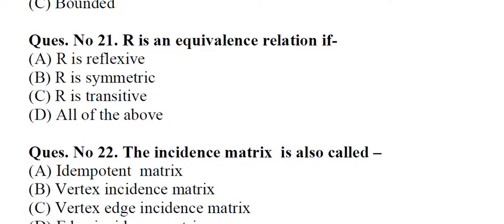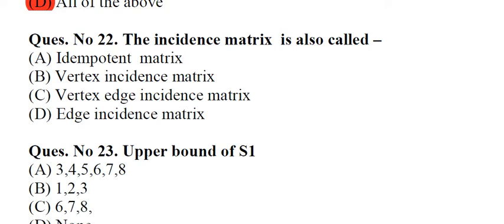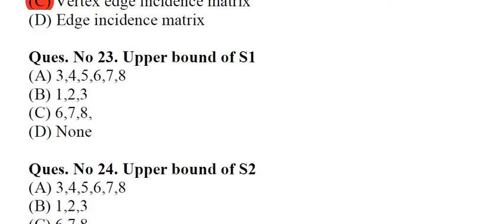Question number 21: R is an equivalence relation if A. R is reflexive, B. R is symmetric, C. R is transitive, D. All of the above. Answer: D, All of the above. Question number 22: The incidence matrix is also called dash. A. Idempotent matrix, B. Vertex incidence matrix, C. Vertex edge incidence matrix, D. Edge incidence matrix. Answer: C, Vertex edge incidence matrix.